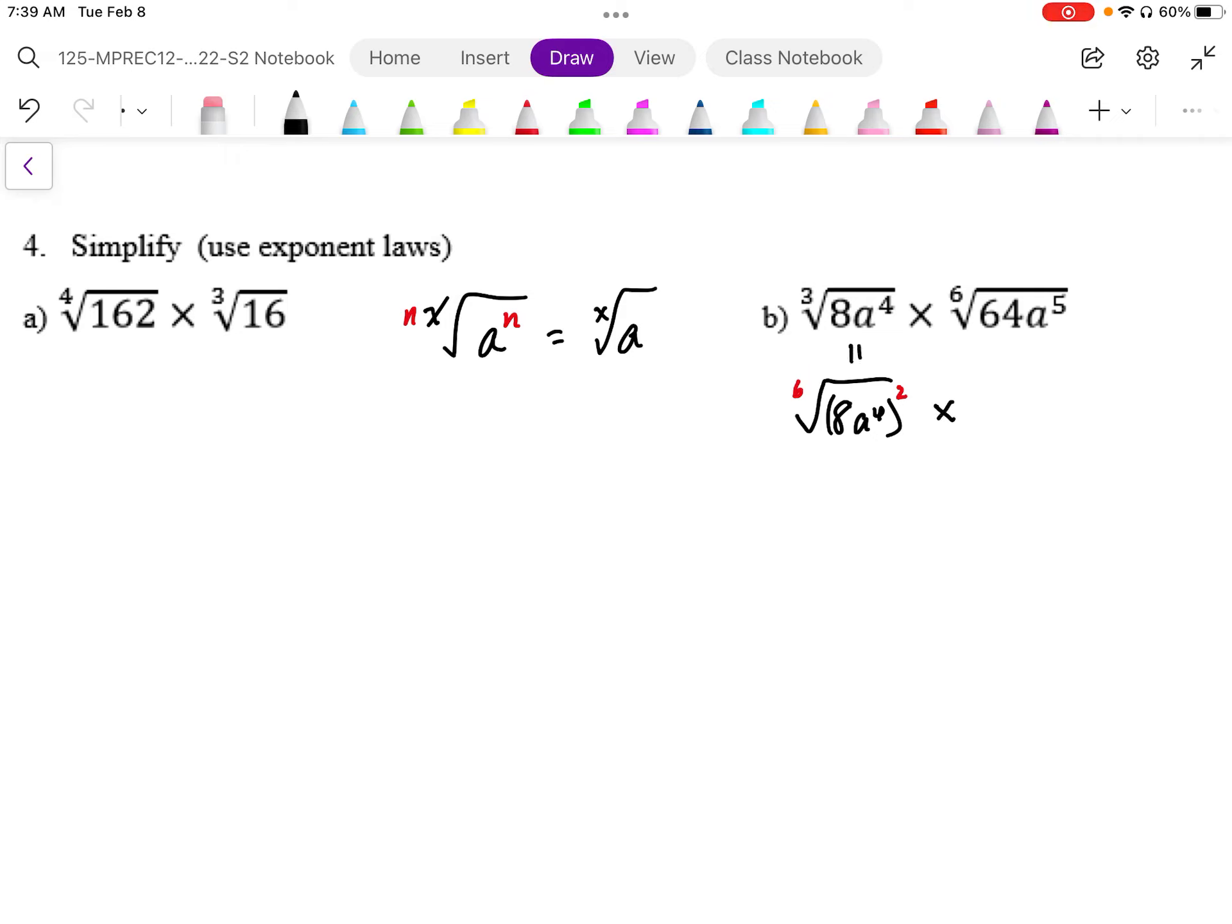We haven't changed, these are equivalent, we haven't changed the value of that. So now we have a common index. We can multiply this together.